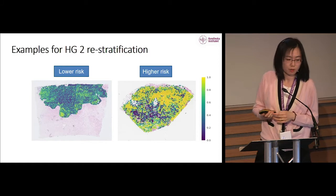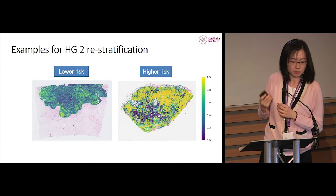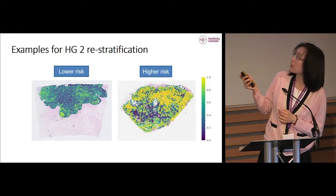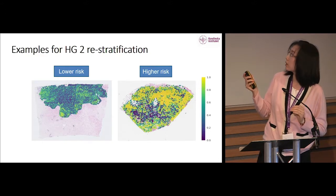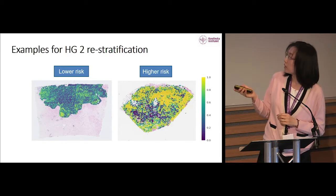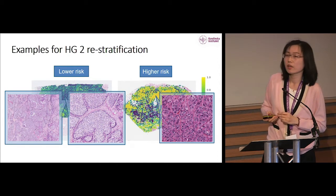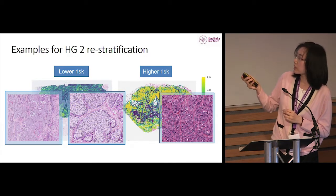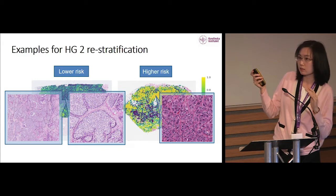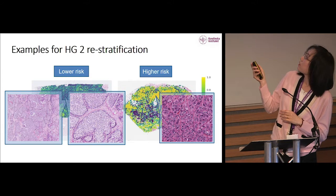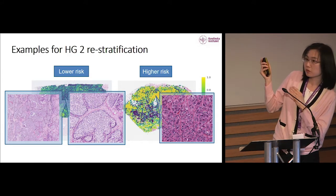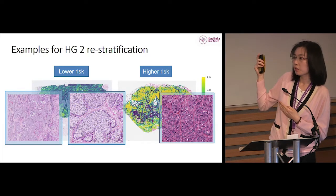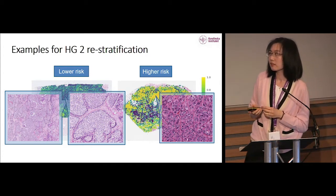Looking at two examples from grade 2 slides, the heat map shows the probability of being higher risk predicted by our model. From the large difference in color, we suspect distinct morphological patterns exist between these two slides even though both were graded as 2. Looking back at the whole slide image, the blue region contains large areas of DCIS — a pre-cancer status — indicating lower risk. The yellow region is full of tumor with few tubules and compact nuclei with large variations in morphological features, consistent with higher risk. Our model appears to be on the right track.